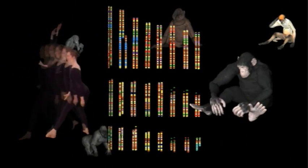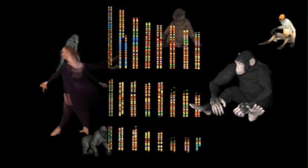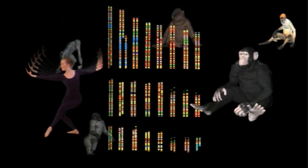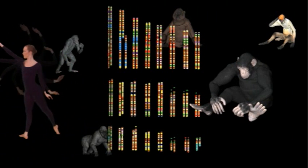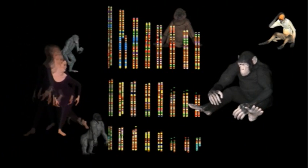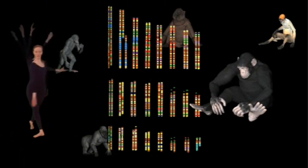In primates, it is found in the exact same chromosomal location, with the same mutations that destroyed its ability to function as a protein-coding gene.